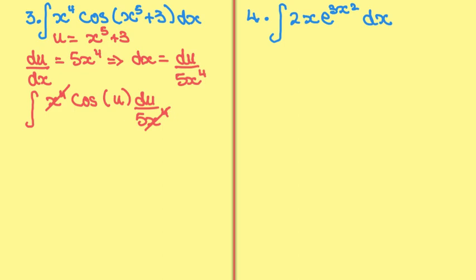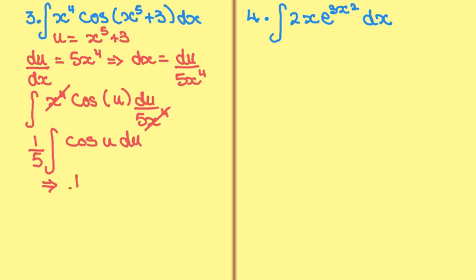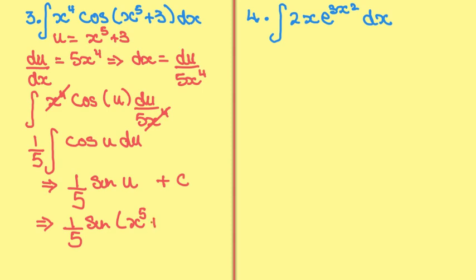So I'm left with one fifth taken outside the integral of cos(u) du. The integral of cos(u) is sin(u), so therefore I get one fifth sin(u) plus c. I know what u is, so therefore my final answer is one fifth sin(x to the power of 5 plus 3) plus c.